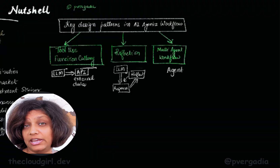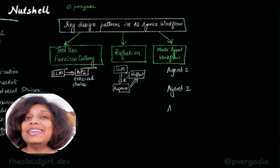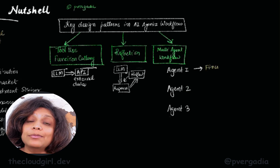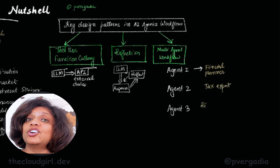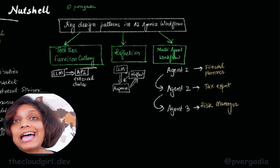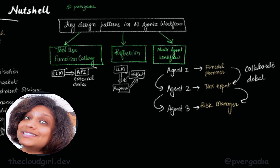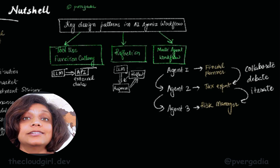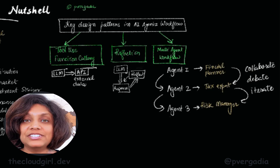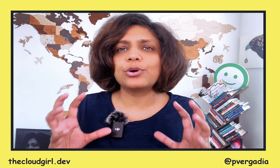The third AI agent design pattern is multi-agent workflow. This is like having a team of financial experts working together, each with specific expertise and a role. For example, in creating a comprehensive financial plan, you might have an AI acting as a financial planner setting overall strategy, another as a tax expert optimizing for tax efficiencies, a risk management AI assessing and mitigating potential risks, an investment analyst AI selecting specific investments, and a regulatory compliance AI ensuring all recommendations meet legal requirements. These agents then collaborate, debate, and iterate to create a complete personalized financial plan.